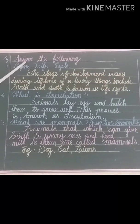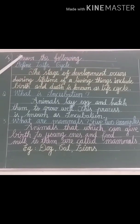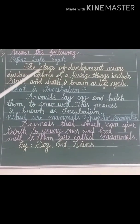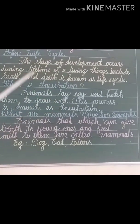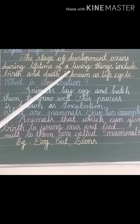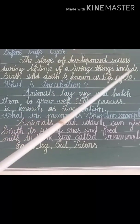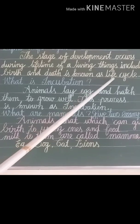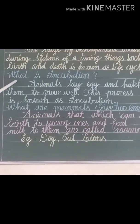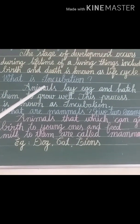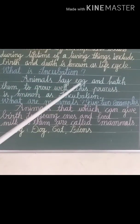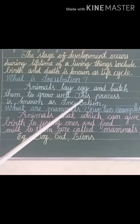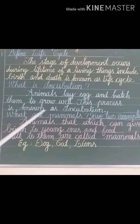Next, answer the following. First question: define life cycle. The stages of development that occur during a lifetime of living things, including birth and death, are known as the life cycle. Second question: what is incubation? Animals lay eggs and keep them warm so they hatch and grow well. This process is known as incubation.